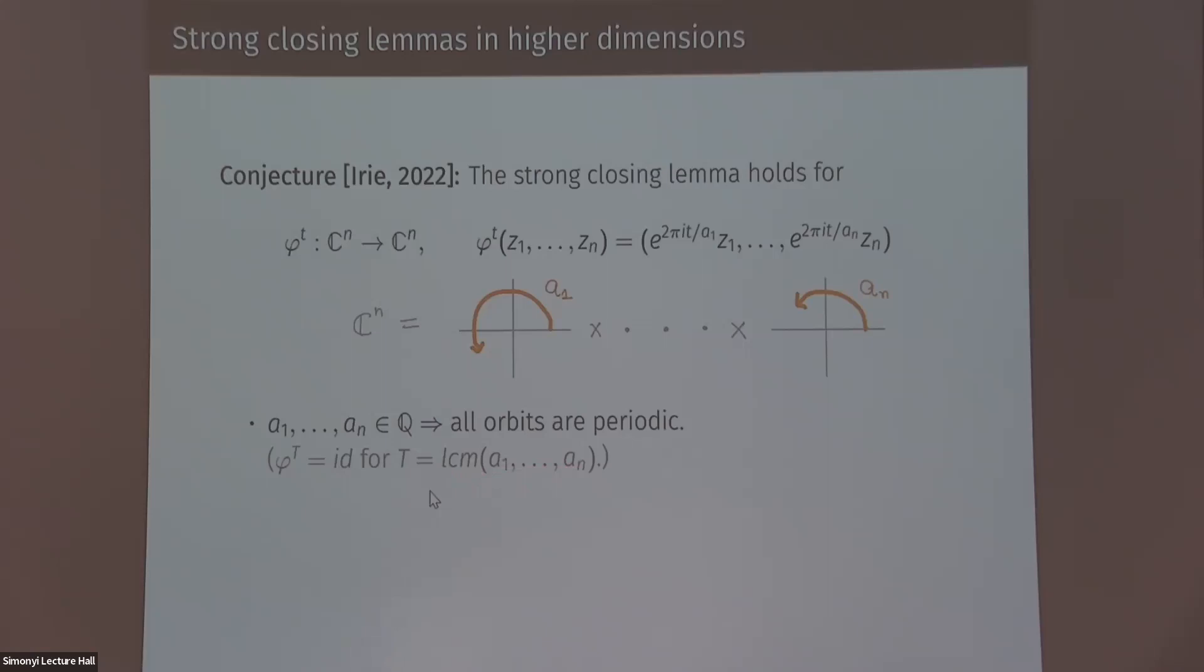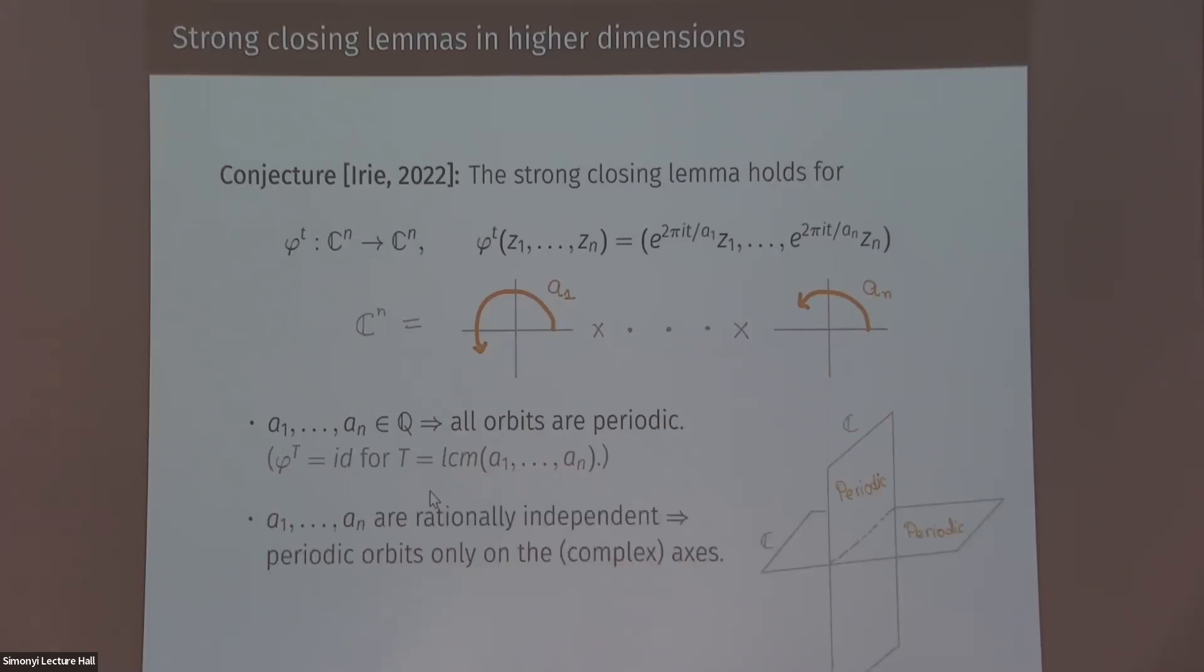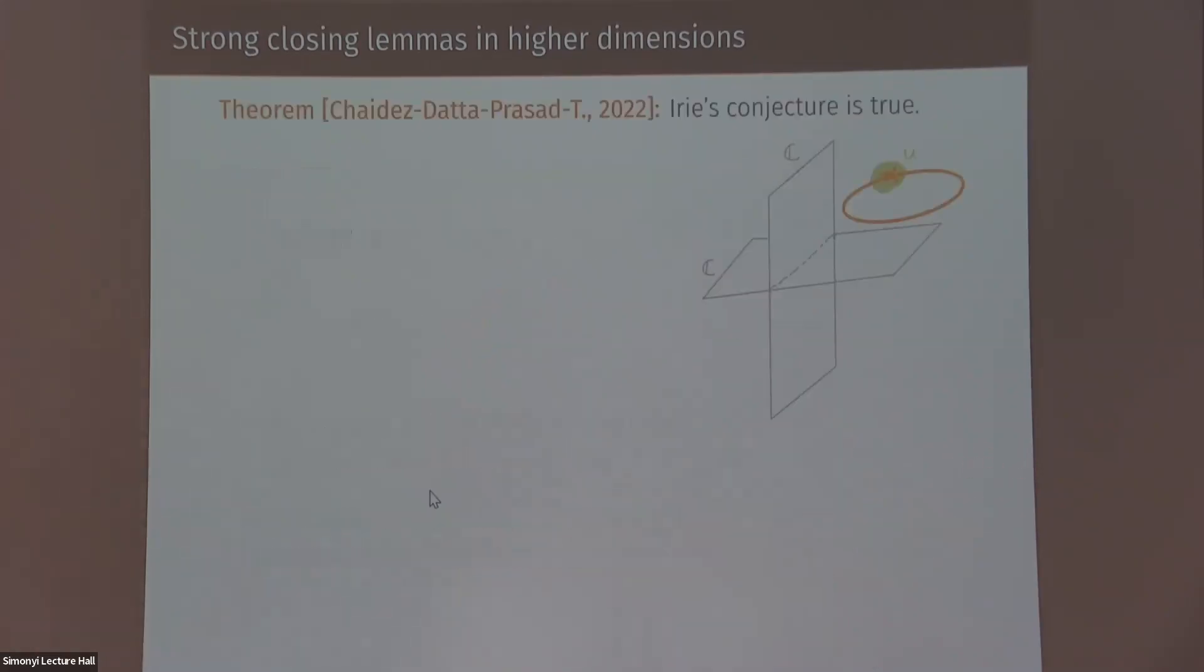These class of flows admit two extreme behaviors. So if all of the coefficients are rational, then every point comes back to itself after time, which is exactly something like the least common multiple of these coefficients. So all of the points are periodic everywhere you have periodic points. The other extreme is when these a_i are rationally independent. And in this case, periodic orbits lie only on the complex axis. So basically you have a lot of space in which you don't have any periodic orbits passing. So what Irie is asking basically is if he gives you an open set here, can you change the flow here in a C infinity manner to produce a periodic orbit passing through it? So the answer is yes. And this is a result of a joint work with Chaidez, Datta, and Prasad. So we basically show that there are plenty of C infinity locally supported perturbations that give you periodic orbit passing through this region.